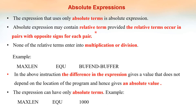Absolute expressions may also contain relative terms — relative terms means variables — provided the relative terms occur in pairs with opposite signs for each pair. For example, MAXLIAN EQU BUFFEND minus BUFFER. Here, BUFFEND and BUFFER are relative or variable terms, but they occur in pairs with opposite signs — positive and negative — so the expression becomes an absolute expression, meaning the value of the expression is a constant. The difference between two addresses gives a constant value. Additionally, none of the relative terms should enter into multiplication or division.